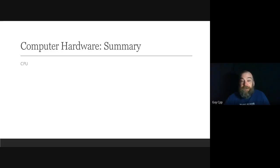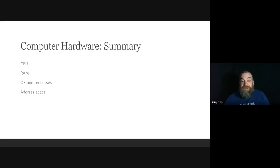We looked at the CPU — how it simply does arithmetic, logic, and moves data. Then RAM as an off-CPU storage mechanism. Then the OS, processes, and their lifecycle. The nature of address space — how it's organized independently of RAM — and how page management achieves this independence. Then how swapping handles multiple processes consuming more address space than available RAM, and its application to hibernation and reducing power consumption.